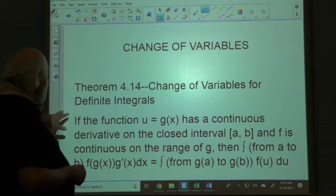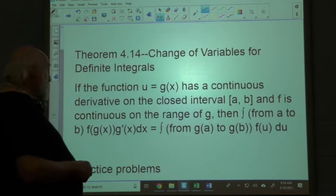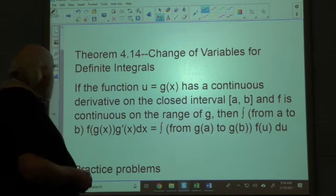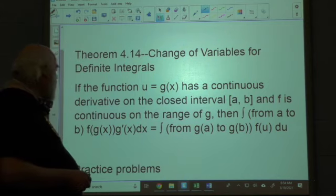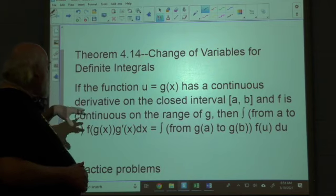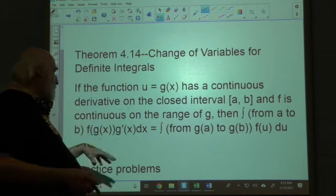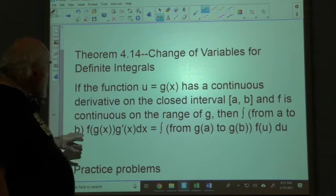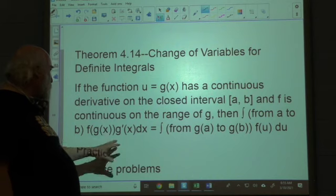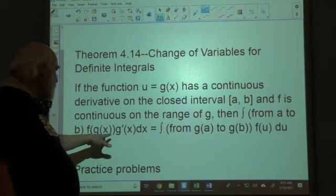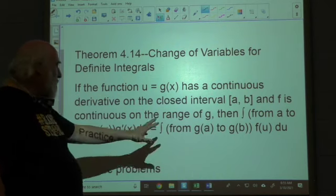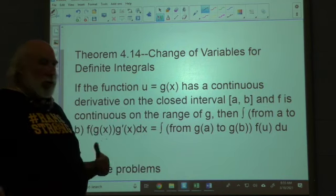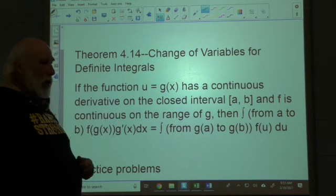But we're basing all this in the book on theorem 4.14 called change of variables for definite integrals. And so we are going to go, if you have a closed system from a to b, your integration of a function of a function times the derivative of that function inside is going to go from a to b for a function of u instead of whatever x we use. Now,